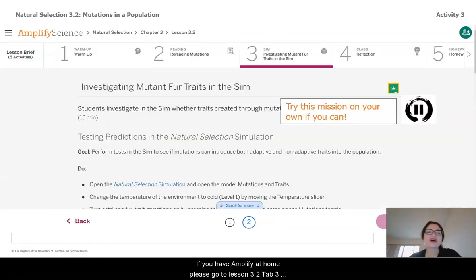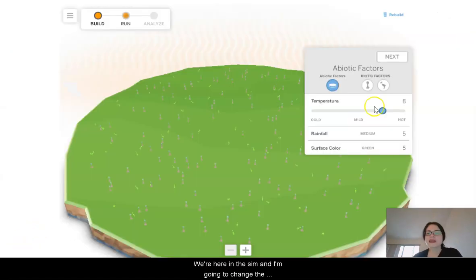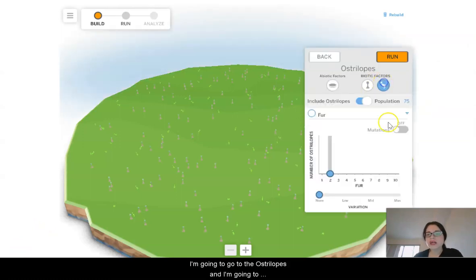If you have Amplify at home, please go to Lesson 3.2, Tab 3, Page 2, and try these missions out on your own. We're here in the sim. I'm going to change the environment to cold. And I'm going to go to the Ostrilopes, and I'm going to turn on mutations. And we're really just looking at fur, like you saw in the diagram before.